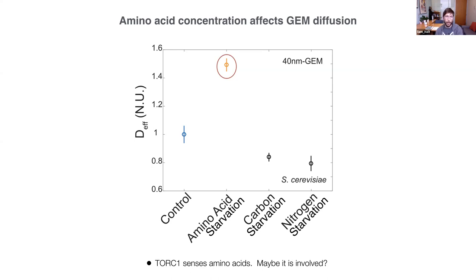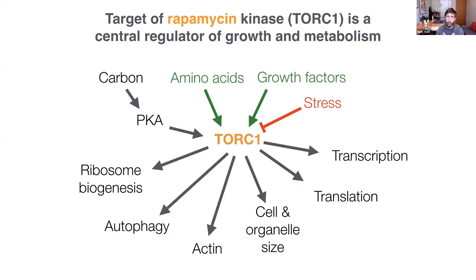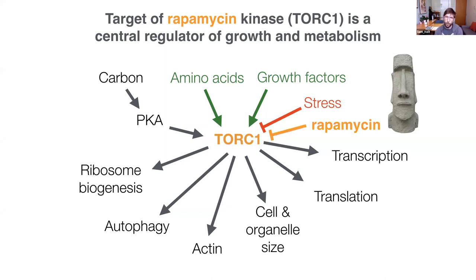Since this was amino acids, we immediately thought of TORC1 — one of the main sensors of amino acids. TOR kinase is a central regulator of growth and metabolism, integrating information about growth factors, amino acids, carbon source, and stress, and controlling pretty much everything. The reason it's called Target of Rapamycin is because of Rapa Nui — Easter Island — where this small molecule was discovered that very specifically and potently inhibits this kinase. So we can simply use rapamycin to ask whether TOR kinase is controlling the physical properties of the cell.